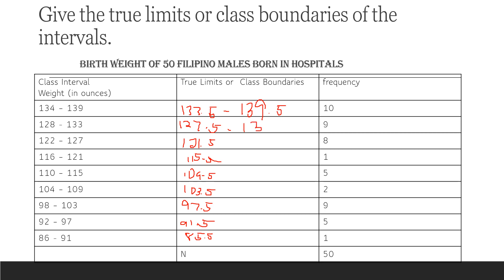Next, for the upper limits: 139.5, 133.5, 127.5, next 121.5, 115.5, 109.5, 103.5, 97.5, then 91.5. So ganyan na po ang paggawa ng true limits or class boundaries. Alright.